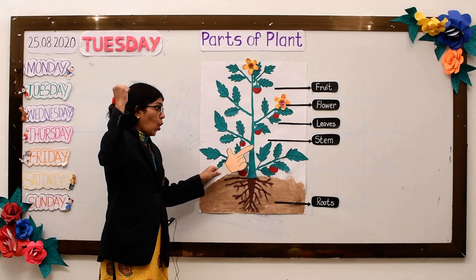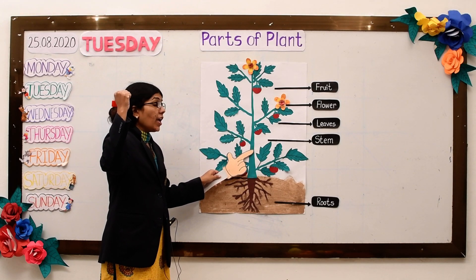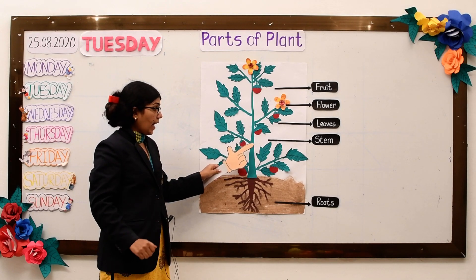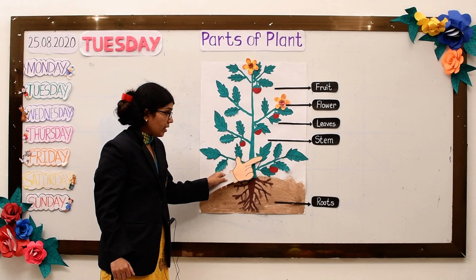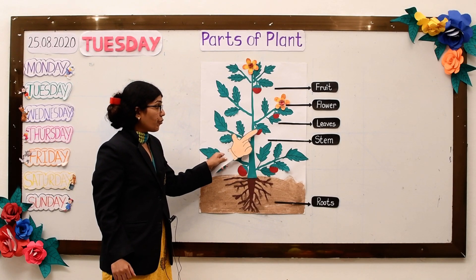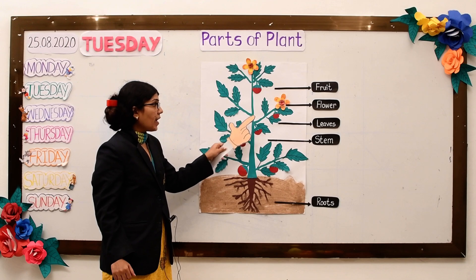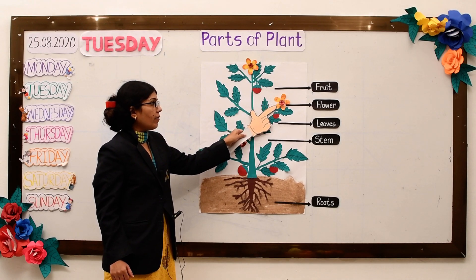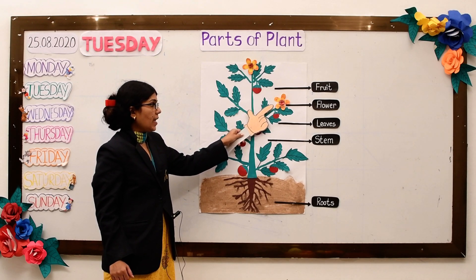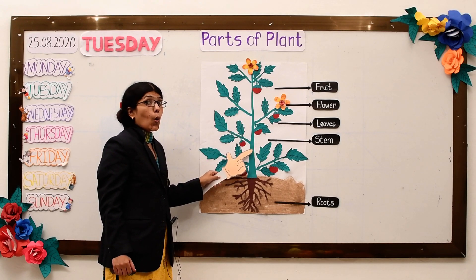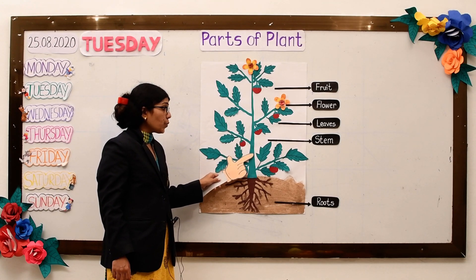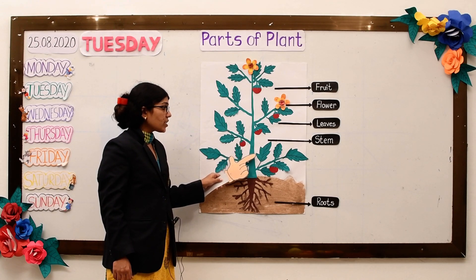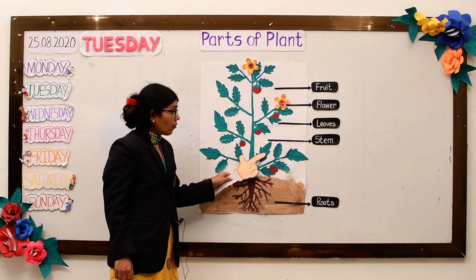Now let's see the stem. The stem grows upward. It is strong — it holds and supports leaves, fruit, and flowers. It also takes water and nutrients and makes them flow up to the leaves.